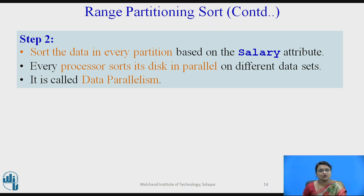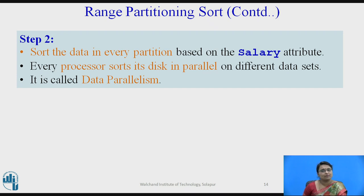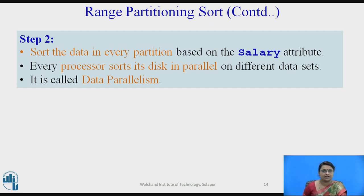Step 2 sorts the data in every partition. All the processors have in parallel sorted the data associated with their disks. Every processor sorts its contents in parallel, and this is called data parallelism because in parallel the data is being read and operated on — here the operation is sorting.